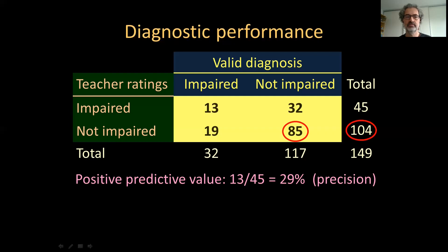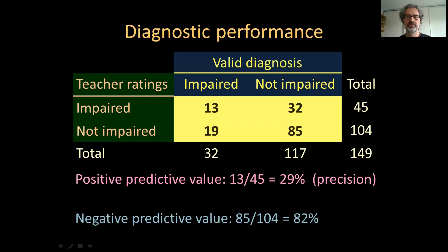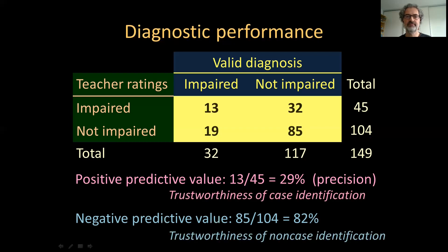Moving on to the second row: out of 104 children classified as non-impaired, only 85 were in fact non-impaired, so the negative predictive value of this test is 82%. The positive predictive value indicates the trustworthiness of case identification — if this instrument identifies a case, what proportion of those identified are actual cases? The negative predictive value is the opposite: if the instrument identifies someone as a non-case, what is the probability that they actually aren't a case?